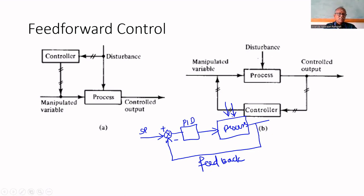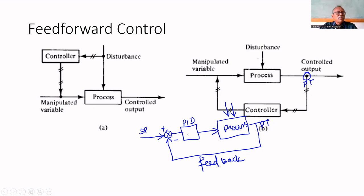Suppose a disturbance enters the process. Because this process has a large dead time, the disturbance will deviate the process. Only after that will the transmitter — say a pressure transmitter — transmit the output to the controller. Then only will the controller take corrective action. Because of the dead time or large time constant, the disturbance will be felt by the controller only after a long time, and before that the process will have deviated from the set point.